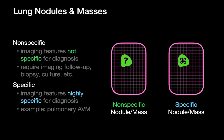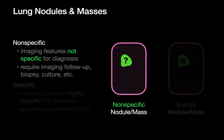Nonspecific nodules and masses are ones where the imaging features are not specific for diagnosis, which means we'll often have to rely on follow-up imaging or sometimes even more invasive tests like biopsy to come to a conclusion. Specific nodules are different — they are highly specific on imaging so that we can usually diagnose what we're looking at without needing follow-up imaging or other tests. For example, if you see a nodule with large blood vessels coming and going from it, you can be pretty certain it's a pulmonary AVM. For this talk, we're going to focus on the first bucket, nonspecific nodules and masses, which are by far more commonly encountered in daily practice.